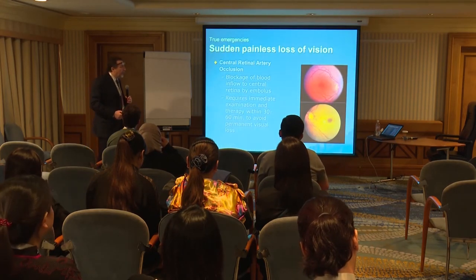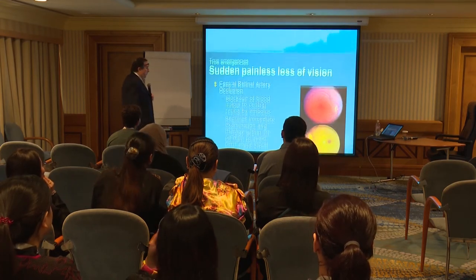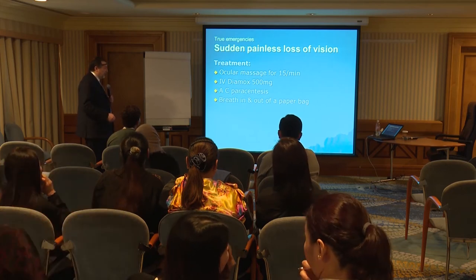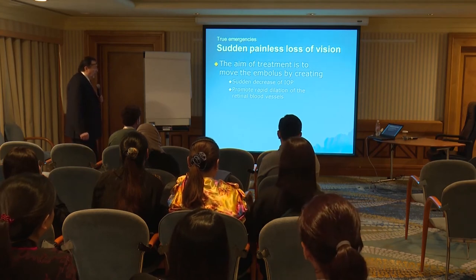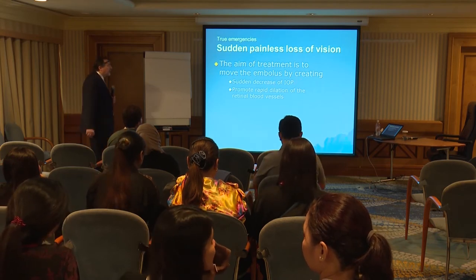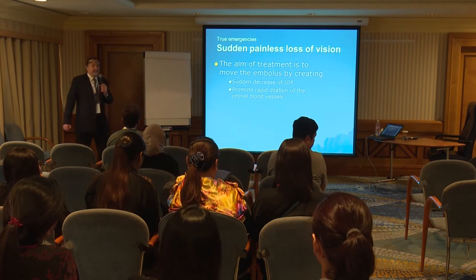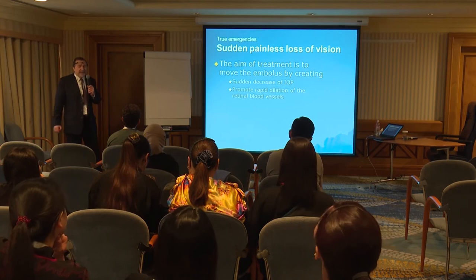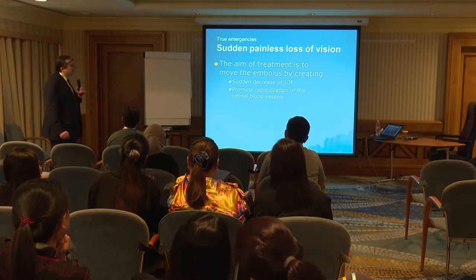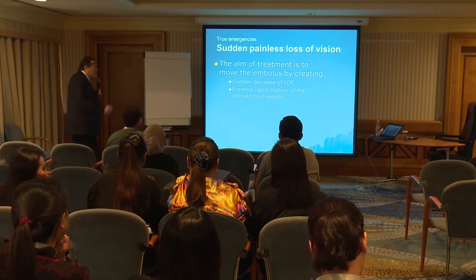Our aim is to reinstate the blood circulation in the retina — to change it from pale to normal. Ocular massage, IV Diamox, and anterior chamber paracentesis all cause a sudden decrease in intraocular pressure and promote rapid dilation of the retinal blood vessels so the patient can see. The problem is we have to initiate treatment as soon as possible, within one hour. If you are late, the patient will become permanently blind in that eye. This is one of the top emergency cases — we must recognize and treat it immediately to save the patient's vision.